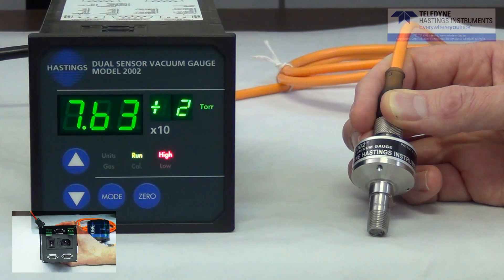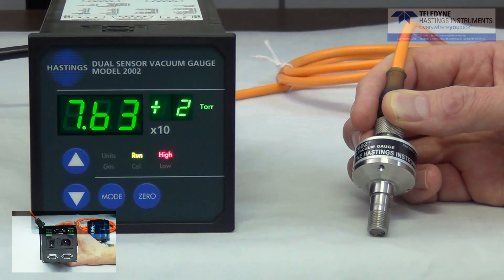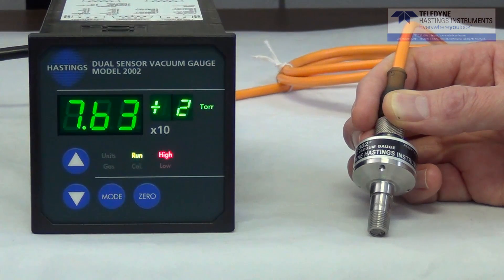Now the microprocessor is always monitoring the micromachined sensors. The instrument uses the signal from the piezoresistive sensor from atmospheric pressure down to 32 torr. Below 8 torr, the output from the thermal sensor is used. And in between 8 and 32 torr, the microprocessor calculates a weighted average between the two sensors to give a smooth transition. The user never sees the crossover.